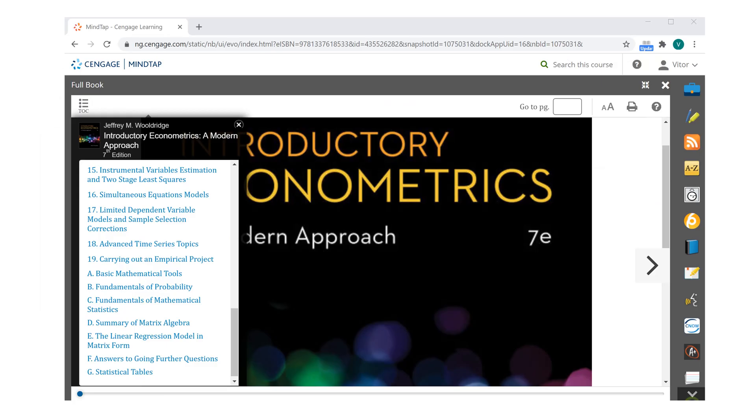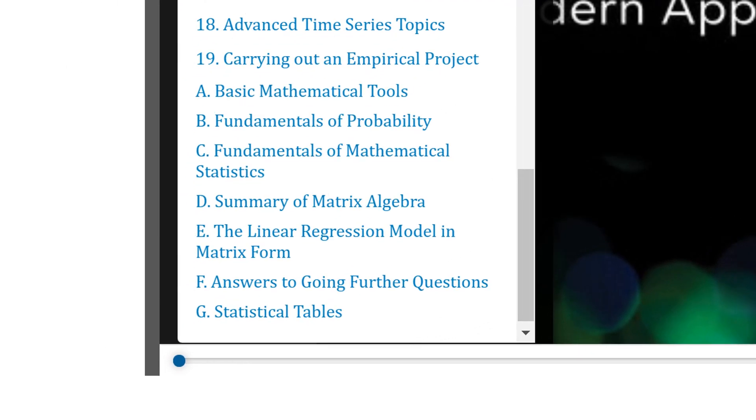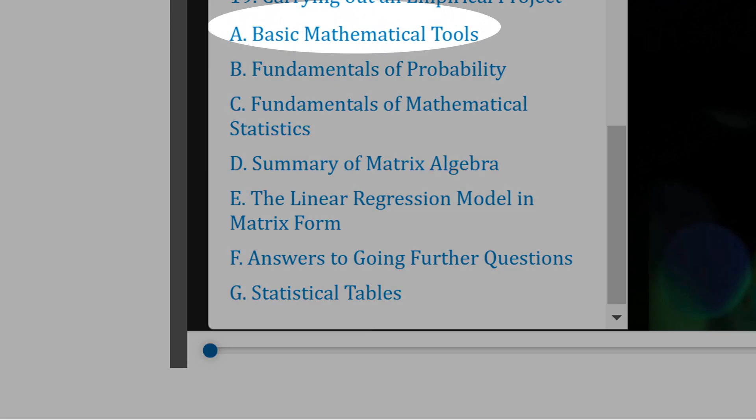Other recommendations. An econometrics textbook you start to read from the appendix. See the appendix of the baby Wooldridge. Basic mathematical tools. Fundamentals of probability. Fundamentals of mathematical statistics.